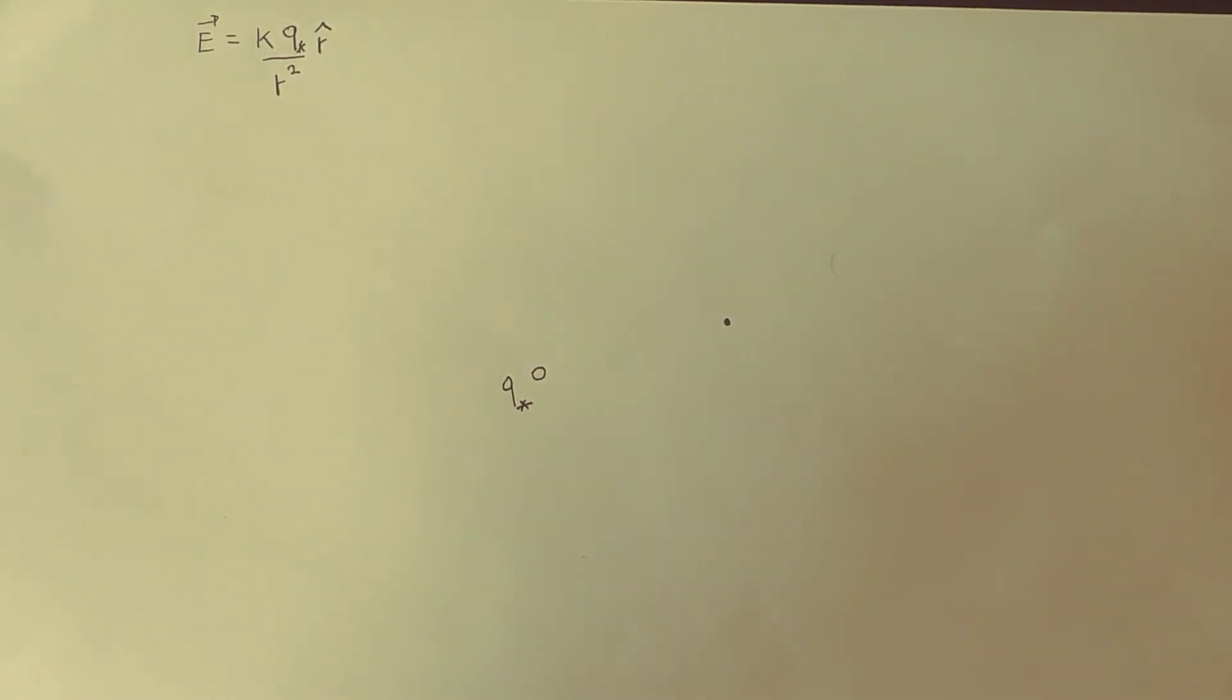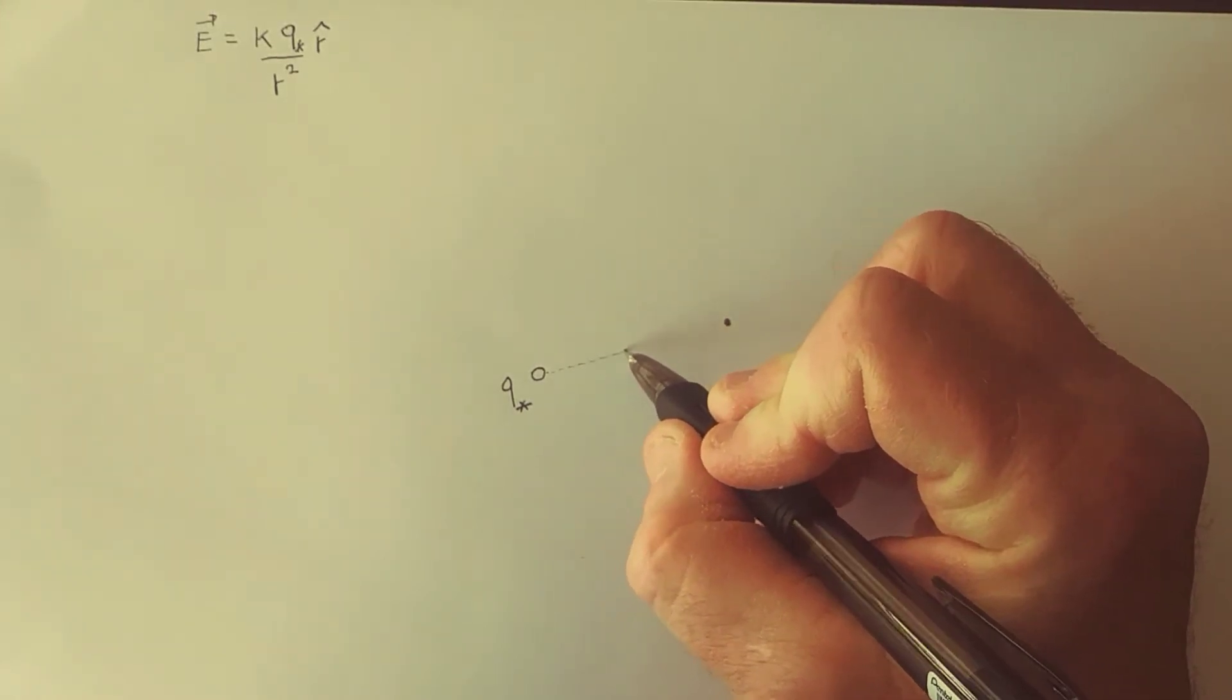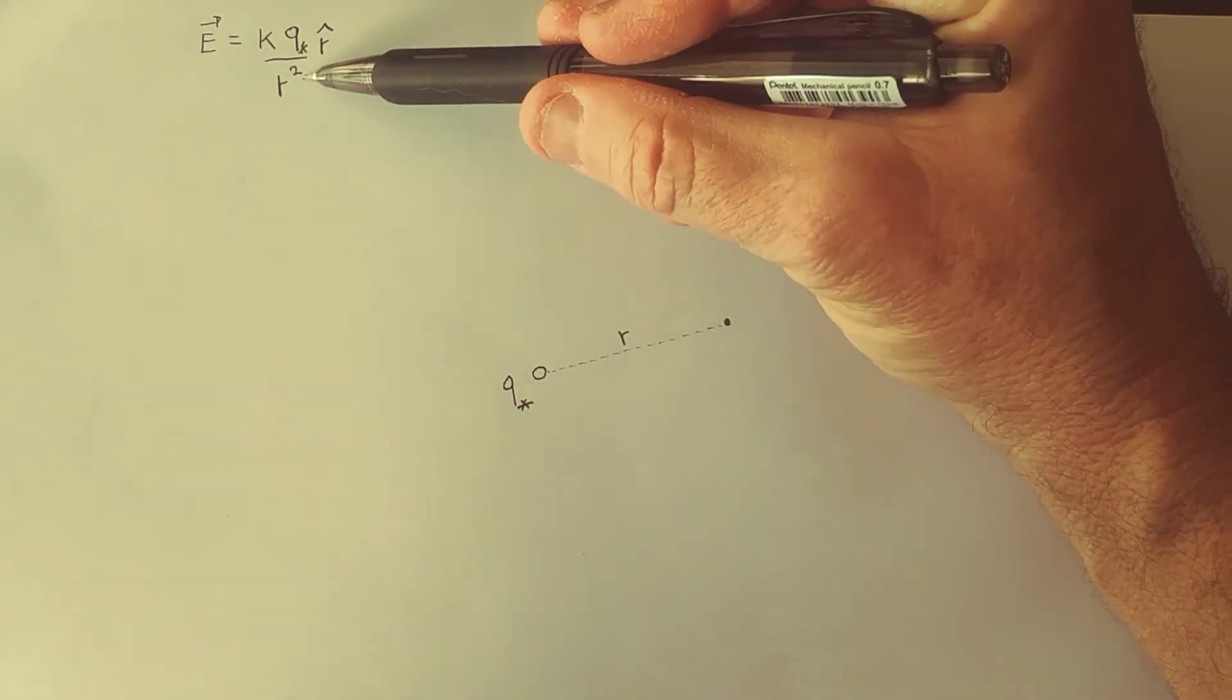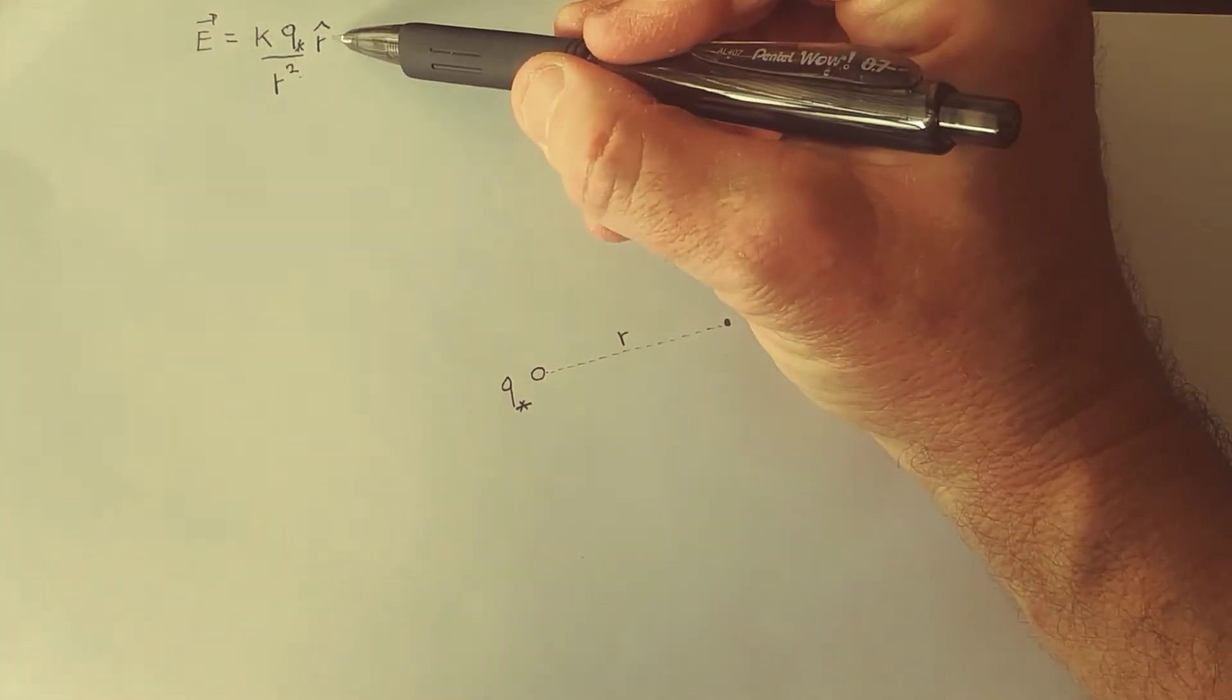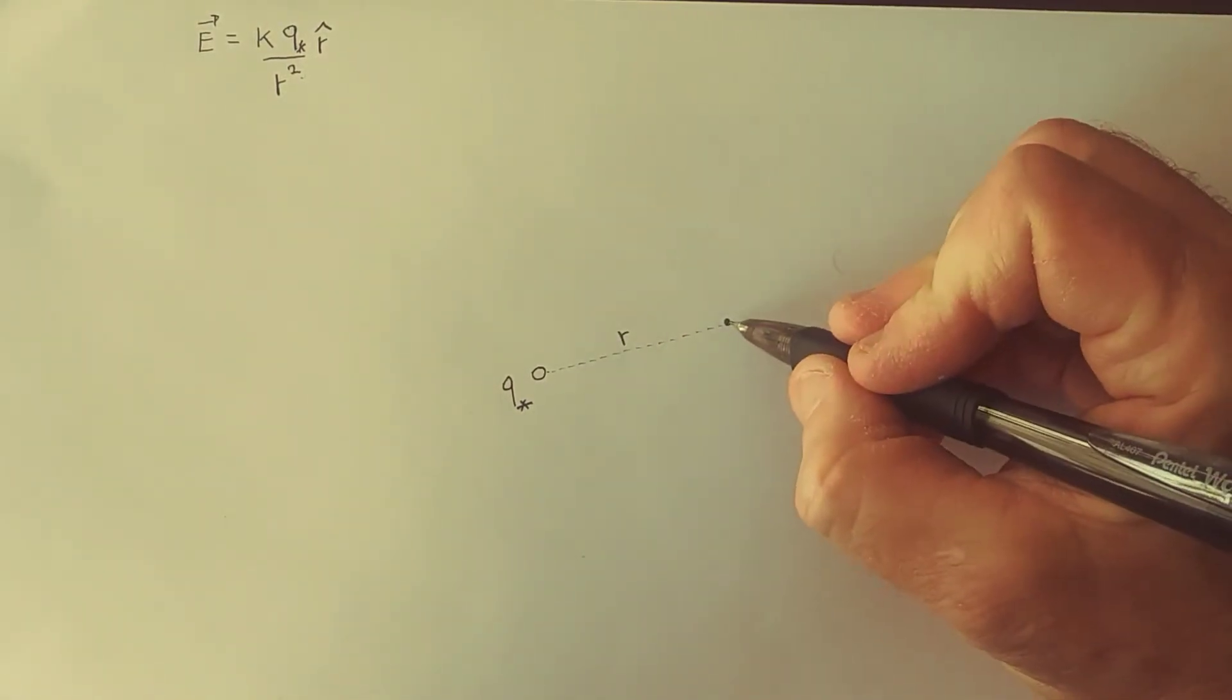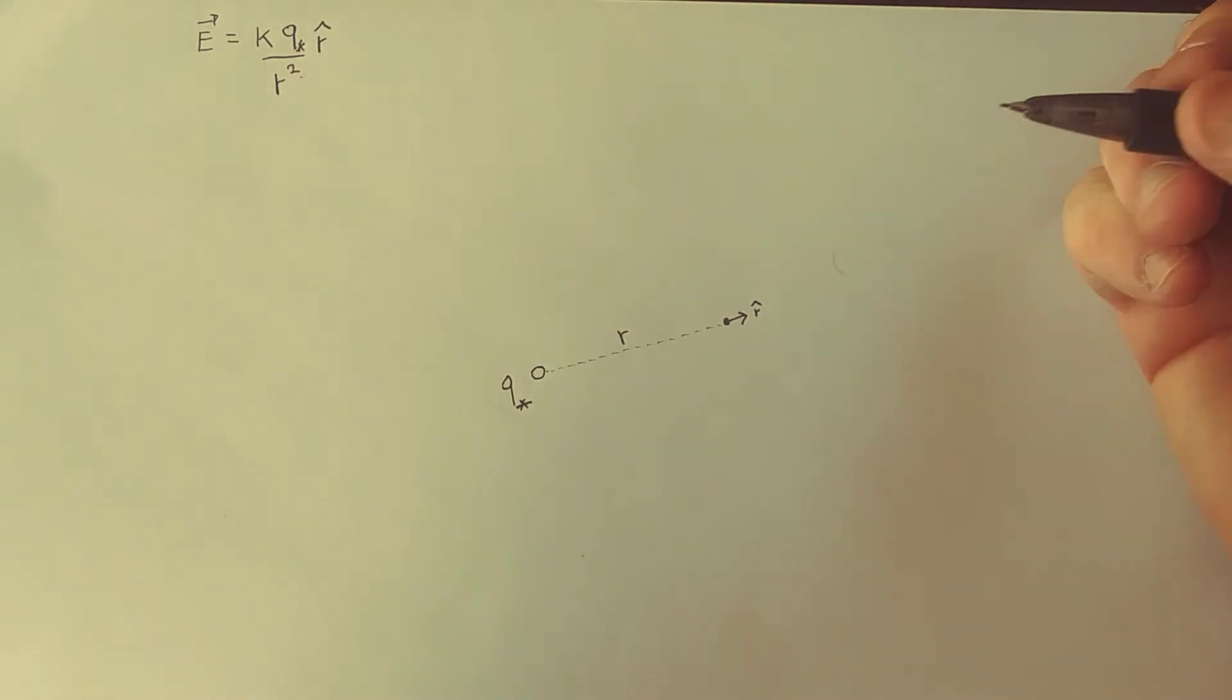Pythagoras theorem is necessary to figure out the distance, and that distance R goes into the magnitude part as R squared. But it also is crucial for this part because the electric field is pointing along this line, so we need a unit vector that's pointing that way.